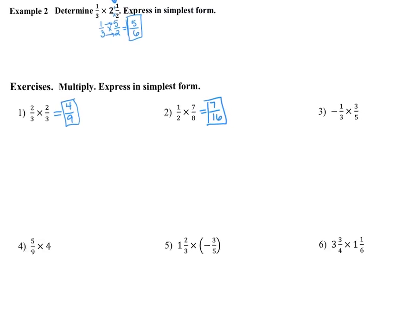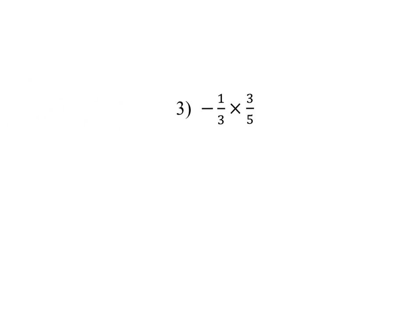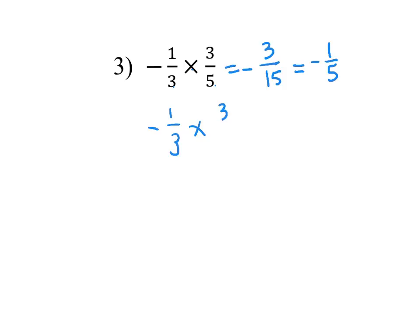Number three. Integer rules. Now, I can multiply straight across. I can say 1 times 3 is 3. 3 times 5 is 15. But what am I going to have to do again? Because it's divisible by 3, right? So it's negative 1/5. I'm going to show you another way. I think y'all have seen it before, hopefully.